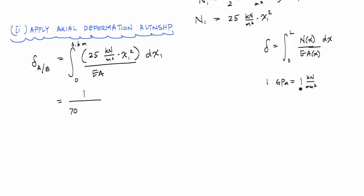One gigapascal is equal to one kilonewton per millimeter squared, and that's a very convenient conversion because a lot of times you'll see things given in terms of kilonewtons and millimeters. This is kilonewtons per millimeter squared times the area. The area of a circle is pi over 4 times the diameter squared, which is 15 millimeters.